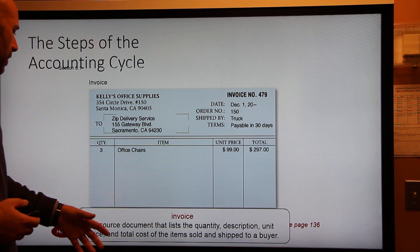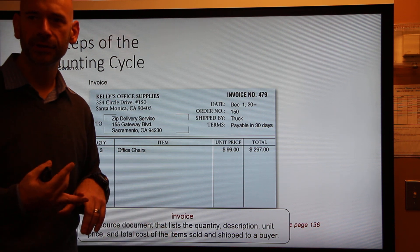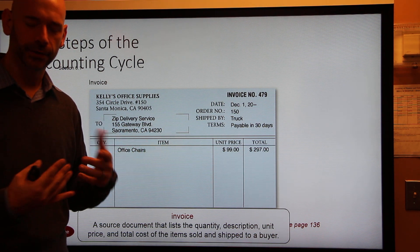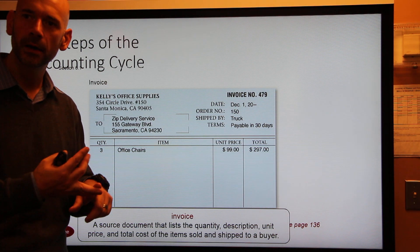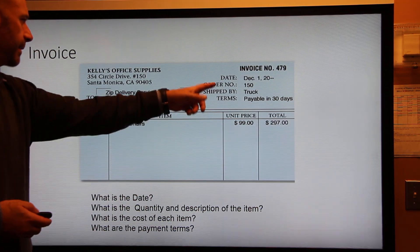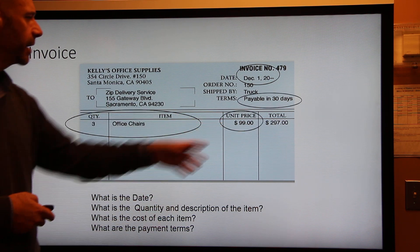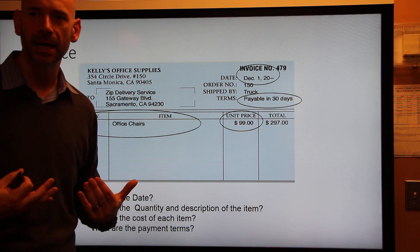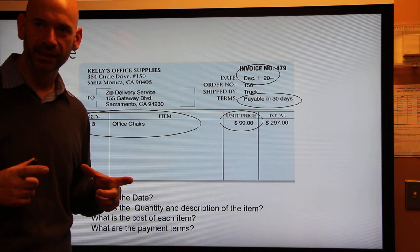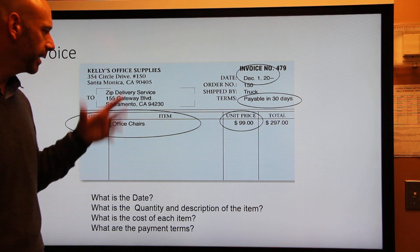The first source document is an invoice. This lists the quantity, description, unit price, and total cost of items shipped to a buyer. You have sales invoices and purchase invoices. Anytime you see an invoice, think 'on account' — either accounts receivable if you sold something on account, or accounts payable if you bought something on account. An invoice will have the date, the amount, the cost of each item, and how long you or your customer has to pay back. In our class, the buyer is always listed on the bottom of the invoice.